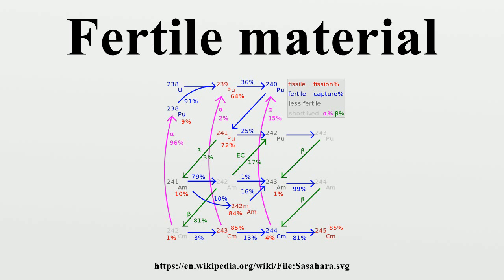Since these require a total of three or four thermal neutrons to eventually fission, and a thermal neutron fission generates only about two to three neutrons, these nuclides represent a net loss of neutrons.